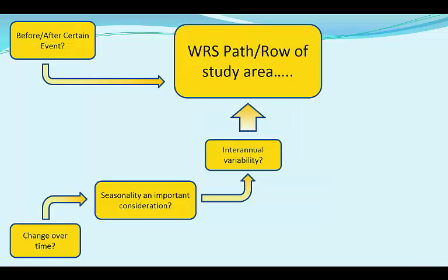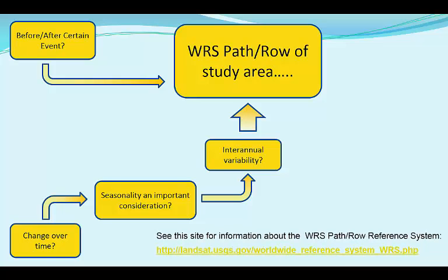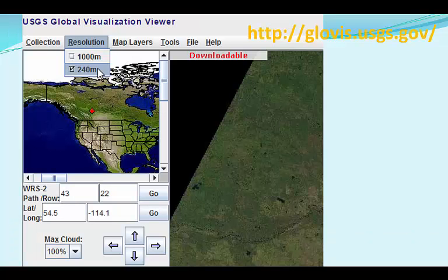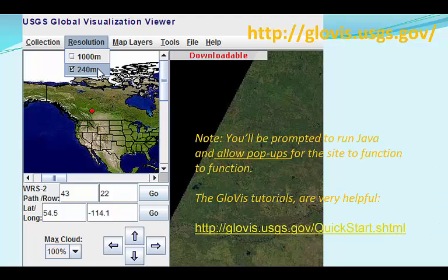Once you have decided on the most appropriate date range, you are ready to search for available images, or scenes, of your study area. To search for these images, it is helpful to begin by learning the correct Worldwide Reference System, or WRS, path and row designation for the scene that includes your study area. The way I prefer to do this is to begin at the Global Visualization website, whose URL and start screen are shown here, which allows users to zoom in on an area of interest and then see its path row designation.